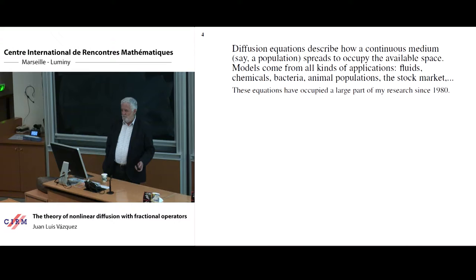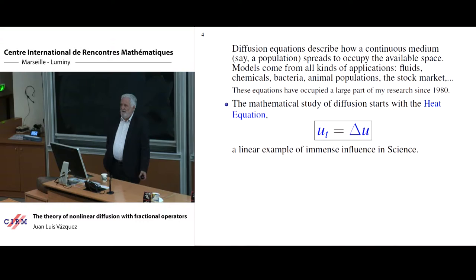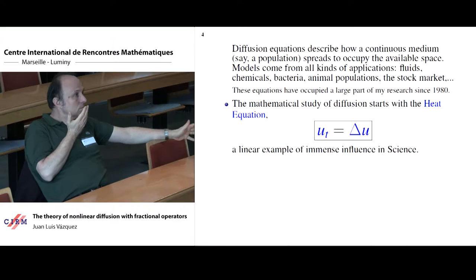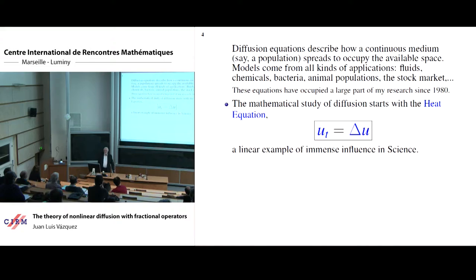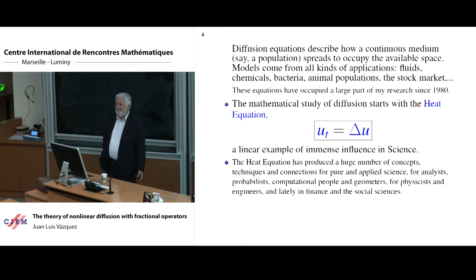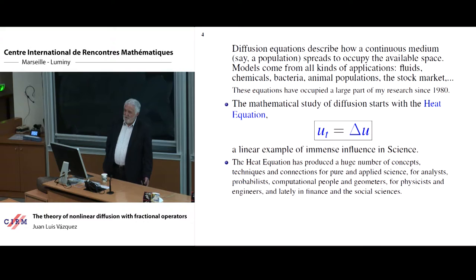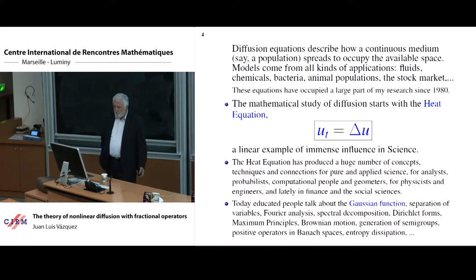If you do it for the stock market then you do Black-Scholes models. The good point of diffusion is that it has a mother equation that allows you to go back home — like going home for Christmas. All people in diffusion know that mother equation is the heat equation. This equation has influenced not only people in mathematics but also physics and engineering, PDEs, functional analysis, geometry, and probability.